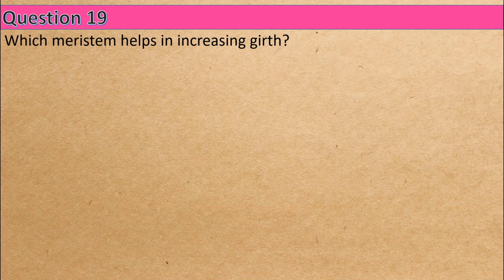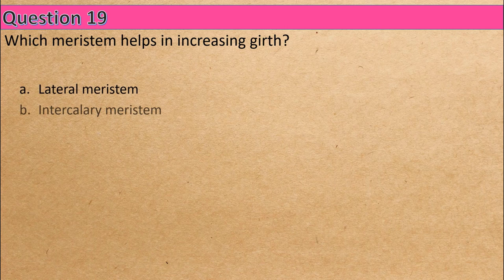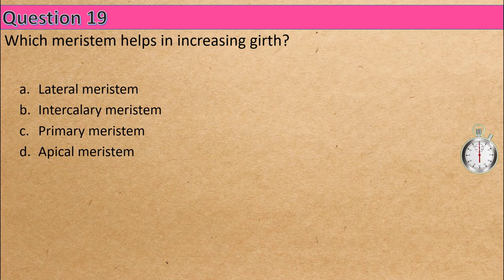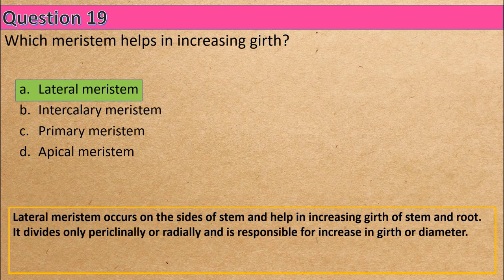Question 19: Which meristem helps in increasing girth? Option A: lateral meristem, Option B: intercalary meristem, Option C: primary meristem, Option D: apical meristem. The correct answer is Option A: lateral meristem.